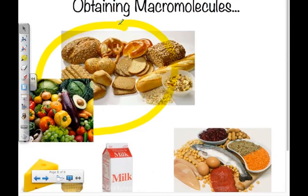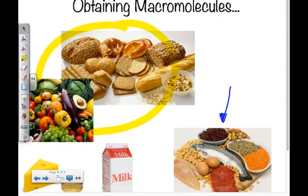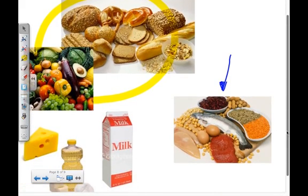Protein is found in meat — any kind of meat — because meat is muscle and that's where protein is heavily used. Protein can also be found in nuts, peanut butter, eggs, and legumes. Legumes are nitrogen-fixing plants like beans.